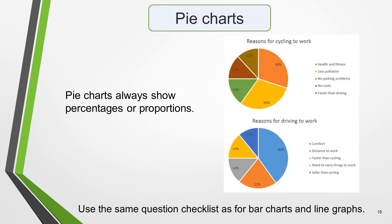Pie charts feature regularly in Academic Task 1. They always show percentages or proportions. Apart from that, they're essentially the same as bar charts and line graphs in that they're another way of presenting data visually. As with tables, the same checklist of questions can be used to analyse them, with the exception of question 2 about the X and Y axes. Pie charts generally have titles and labels, or sometimes a key instead of segment labels. The key explains what each segment of the pie chart represents.